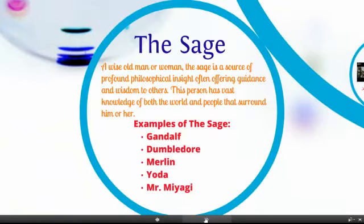The sage is a wise man or wise woman — a source of profound philosophical insight, usually guiding the hero. Some examples are Gandalf, Dumbledore, Merlin, Yoda, and Mr. Miyagi. These are the people that the hero goes to for guidance.